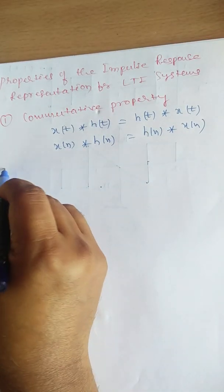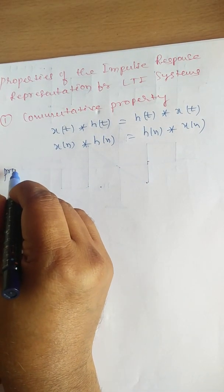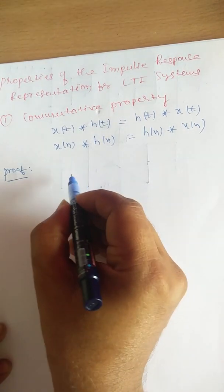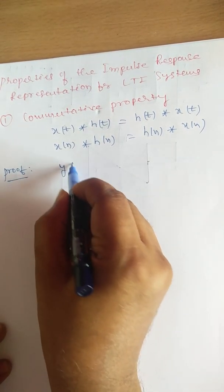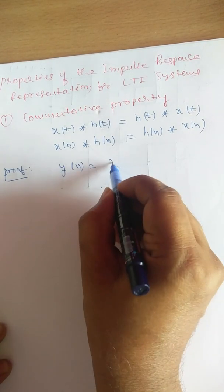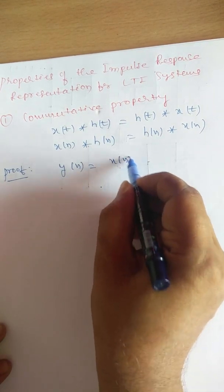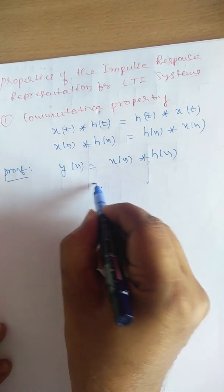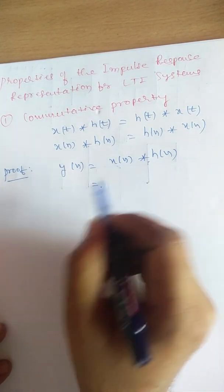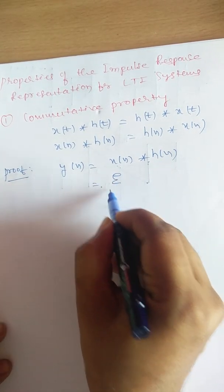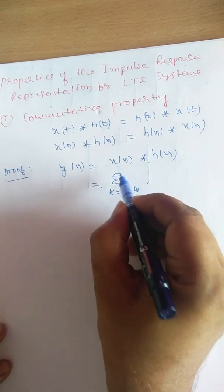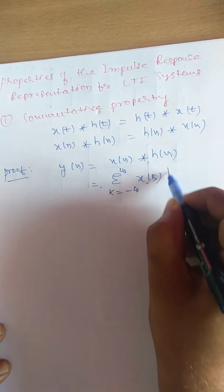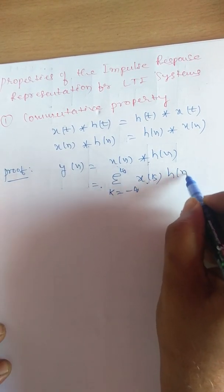To prove this, let us take y(n) equals x(n) linearly convolved with h(n). Using the convolution sum formula, this is the summation from k equals minus infinity to plus infinity of x(k) into h(n minus k).